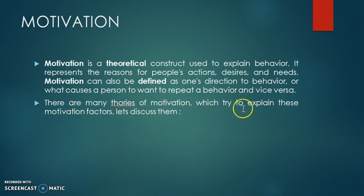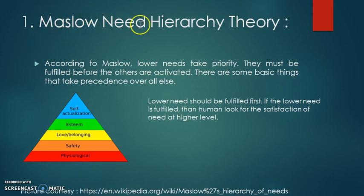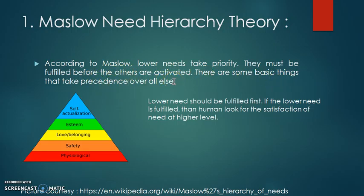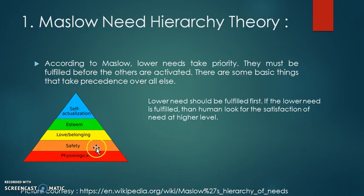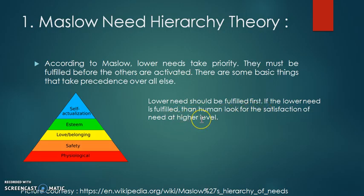There are many theories of motivation which try to explain these motivation factors. Let's discuss them one by one. The very first theory is Maslow's Need Hierarchy Theory. According to Maslow, lower needs take priority — they must be fulfilled before the others are activated. There are some basic things that take precedence over all others. Maslow's hierarchy says physiological needs should be fulfilled first, then safety needs, then love and belonging, then esteem, and on top, self-actualization. Lower needs should be fulfilled first; once fulfilled, humans look for satisfaction at the higher level.